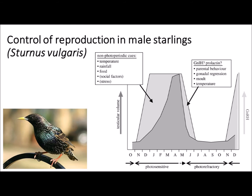Let's have a look at an example from this paper in a little bit more detail. This graph explains the control of reproductive activity in male starlings. The dark parts of the graph show changes in the bird's testicular volume. The light grey parts show the concentrations of GnRH — gonadotrophin releasing hormone — which is a hormone that then releases follicle stimulating hormone, which influences the reproductive cycle by impacting positively on testicular activity. On the graph we've got photosensitive and photorefractory periods across the different months of the year. We've also got non-photoperiodic cues: temperature, rainfall, food, as well as social factors and stresses, which are going to influence the reproductive potential of the birds.